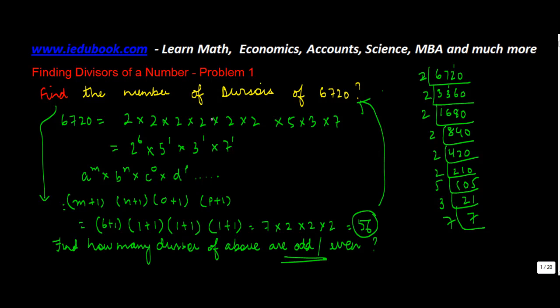So in order to find out the number of odd divisors here, look, whenever you are multiplying 2, you know, any value of 2, in the sense any power of 2, whether it be 1, 2, 3, 4, is going to give you an even number.